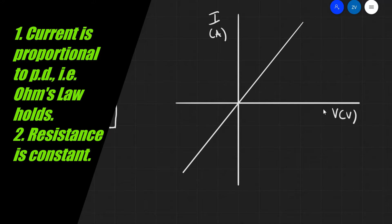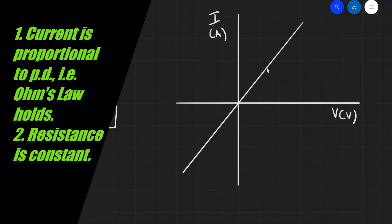The other thing to notice is that the resistance does not change. Both in the negative range and in the positive range the gradient of the graph remains unchanged — it's a straight line through the origin, which means the resistance is constant. This makes sense because if we have a resistor of, say, 100 ohms, we want it to remain constant rather than jumping to 1000 ohms or 300 ohms.